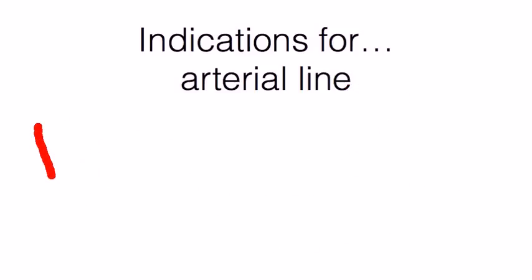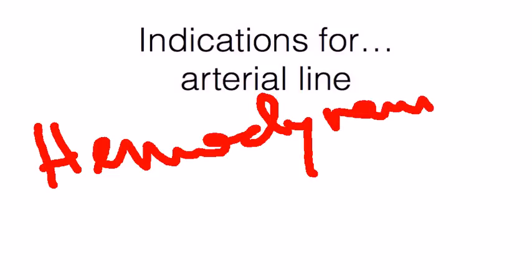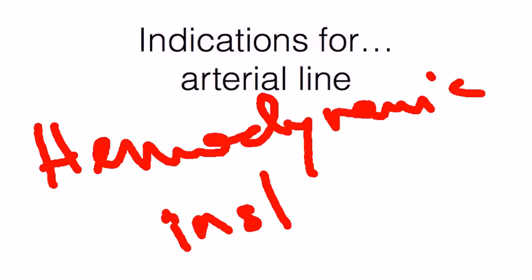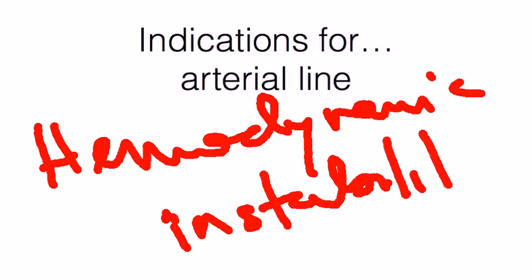The next thing is hemodynamic instability. If you have someone who's got labile blood pressure or someone who's on vasopressors, you may want to consider an arterial line to make sure that you titrate the vasopressor use appropriately and you're not targeting a falsely high or falsely low pressure. And this can be a situation as well where if the blood pressure cuff seems abnormally low or abnormally high and doesn't fit the clinical setting, at that point you may need to have an arterial line to confirm that.